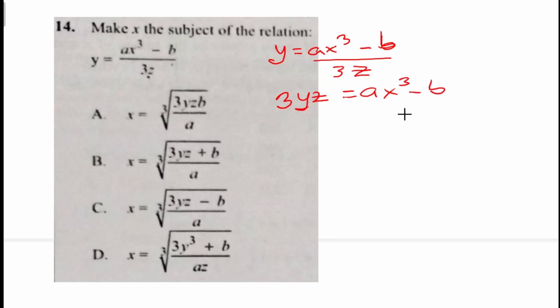Then now we add b to both sides, and that gives us 3yz plus b equals ax cube. Now we are solving for x, so whenever a number is multiplying a variable we divide through by the number, but this time it's a. So we're going to divide both sides by a, and that gives us 3yz plus b all over a equals x cube.